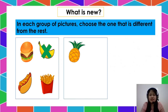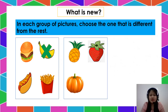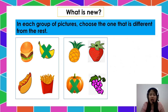Next: pineapple, strawberry, squash, and grapes. Choose the one that is different from this group. That is the squash because this group are fruits while squash is a vegetable.